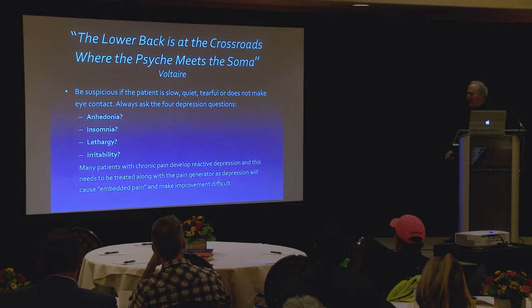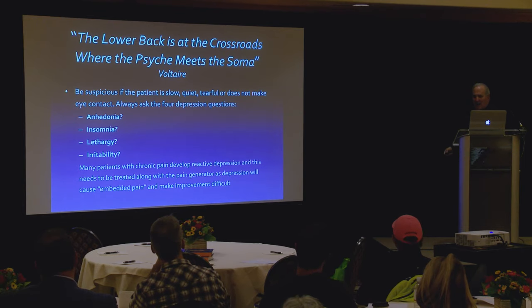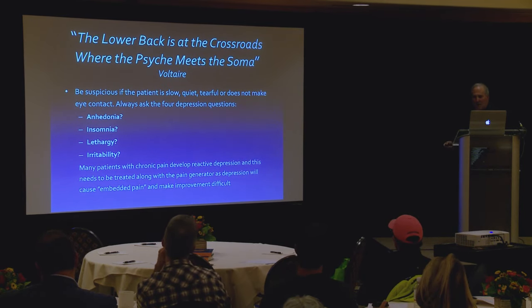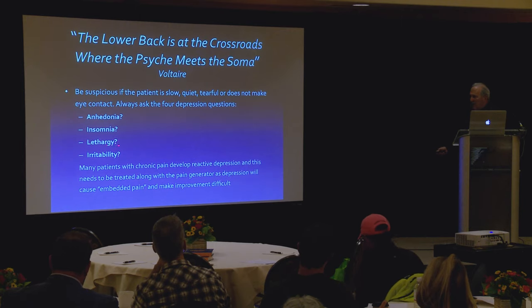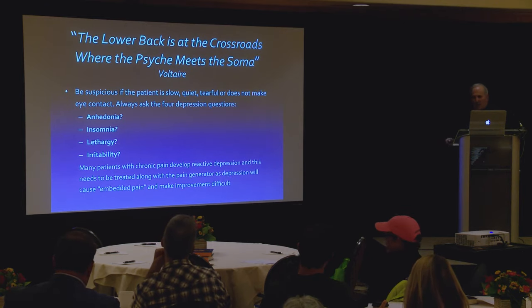A quote from Voltaire: the lower back is at the crossroads where the psyche meets the soma, where the brain meets the body. You can have a crappy elbow, lousy knee, or miserable foot and not get depressed. But if you have a crappy back, you will get depressed because you can't do the activities you'd like to do. Patients commonly get reactive depression, so ask the four depression questions: anhedonia, insomnia, lethargy, and irritability. Lack of fun, walking through mud, insomnia — do they get to and stay asleep? Lethargy — always tired? Irritability — do they flash out at their partner? Many patients will have this not because of predisposed depression but because chronic back pain creates this kind of problem.